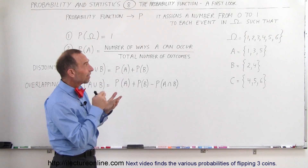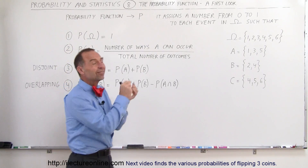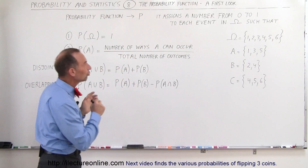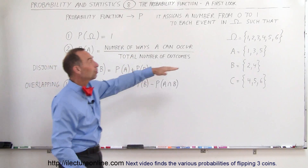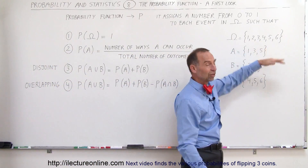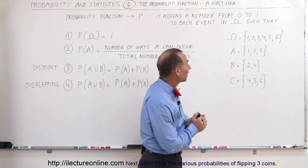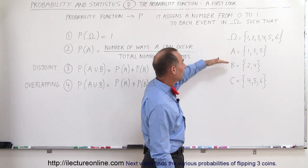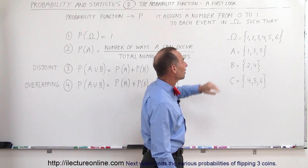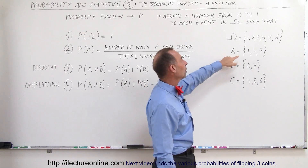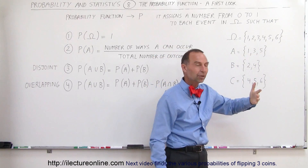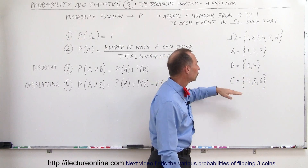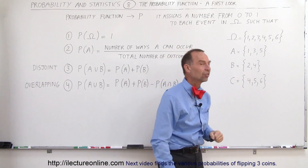The probability function assigns that number to each event in the sample space according to some rules. Let's say we have a sample space of numbers 1 to 6 — that could be the numbers on a die — and we have three events: Event A contains the elements 1, 3, 5; Event B contains the elements 2 and 4; Event C contains the elements 4, 5, and 6.